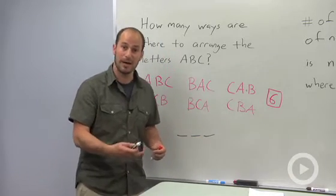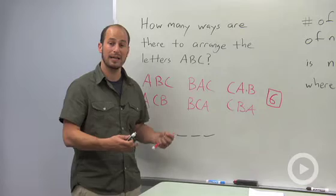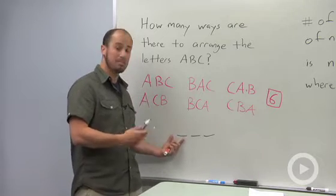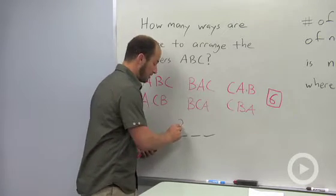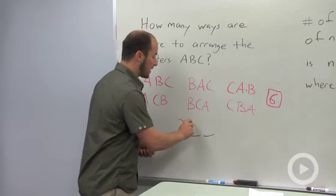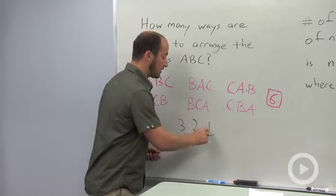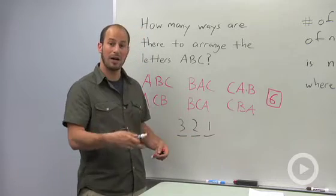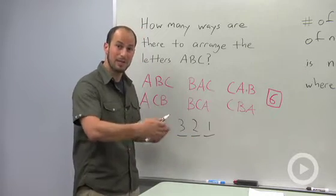We have three letters at our disposal, so the first spot can be filled by three letters. We've already used one, so the second spot could be filled by two. And the last spot, there's just one letter left. Using our fundamental counting principle, we can just multiply these together.